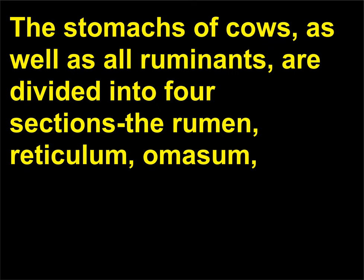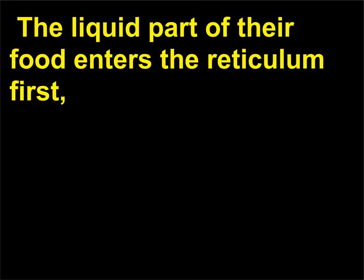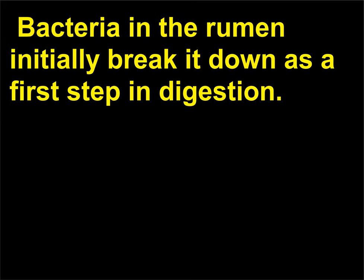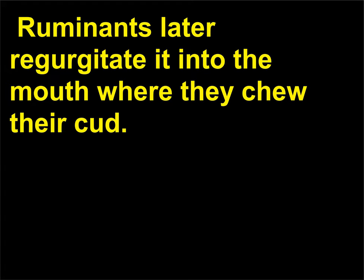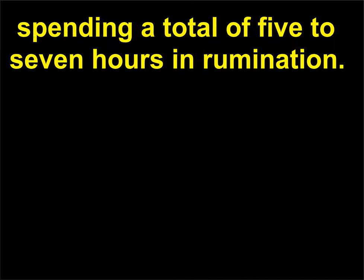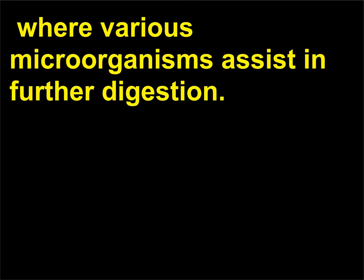The stomachs of cows, as well as all ruminants, are divided into four sections. Ruminants eat rapidly and do not chew much of their food completely before swallowing it. The liquid part of their food enters the reticulum first, while the solid part enters the rumen where it softens. Bacteria in the rumen initially break it down as a first step in digestion. Ruminants later regurgitate it into the mouth where they chew their cud. Cows chew their cud about 6 to 8 times per day, spending a total of 5 to 7 hours in rumination. The chewed cud goes directly into the other chambers of the stomach, where various microorganisms assist in further digestion.